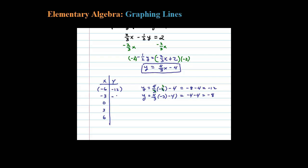For zero, four-thirds times zero is zero, minus four is negative four. That's actually my y-intercept. You always want to try to catch your x and y-intercepts when you choose your values if you can.